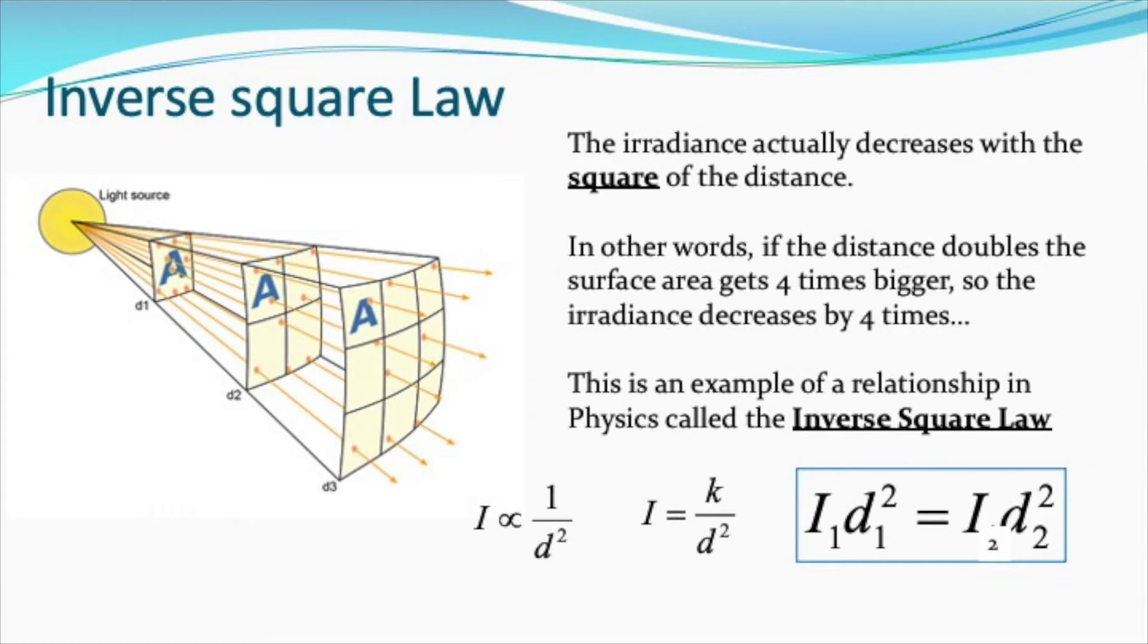This is an example of a relationship in physics called the inverse square law. Irradiance varies with 1 over d squared, so irradiance will be equal to some constant divided by d squared. Or we could rearrange that and say I₁d² at one location will be equal to I times d² at another location.